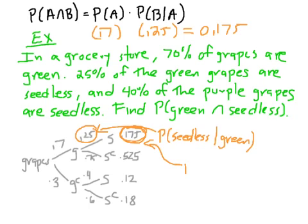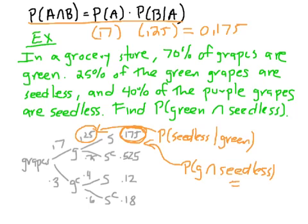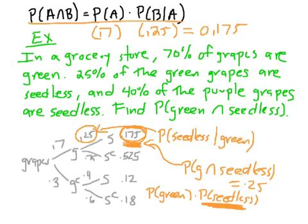That number 0.175 is what you get from the branch for green and seedless. The tree diagram does this formula intuitively — it's way easier to think about in a tree diagram than the symbolic formula. Note that you wouldn't just say the probability of green times the probability of seedless, because the overall probability of being seedless would include both green and purple seedless grapes combined, which is not what you want here. That's a good example of the general multiplication rule.